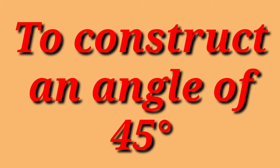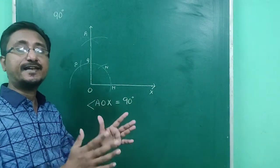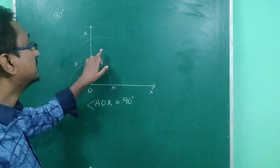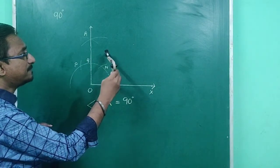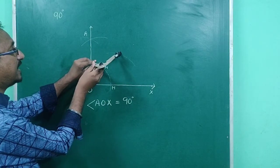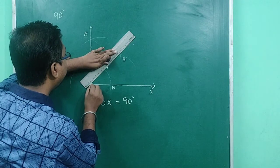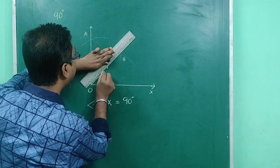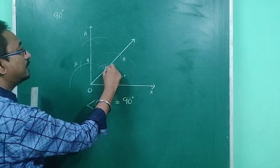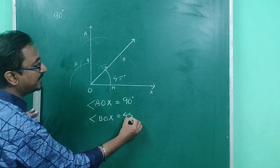Let's construct an angle of 45 degrees. 45 degrees is the bisector of angle 90 degrees, so first we have to construct a 90 degree angle, which we have already done. Taking center M and Q, I have drawn two arcs. Taking center M I have drawn an arc, and again taking center Q with the same radius I have drawn another arc which cuts the previous arc. I have joined OB — that is, I have drawn a ray from O passing through B — and this results in angle 45 degrees. So angle BOX is equal to 45 degrees.